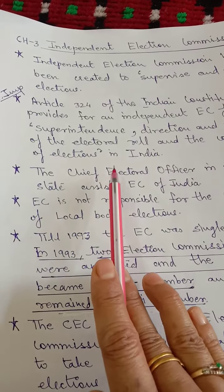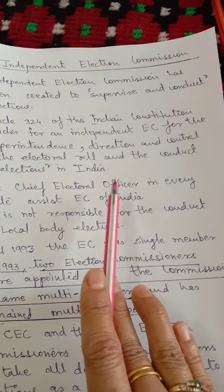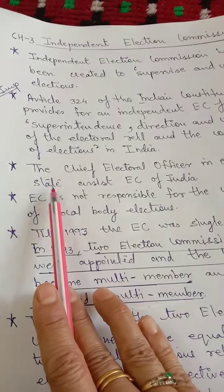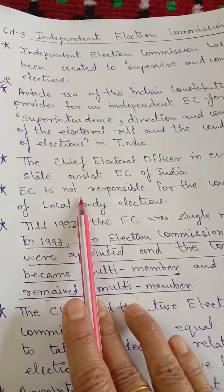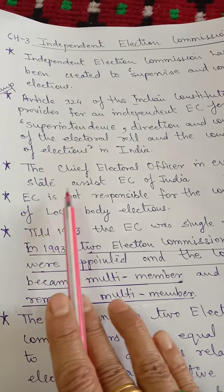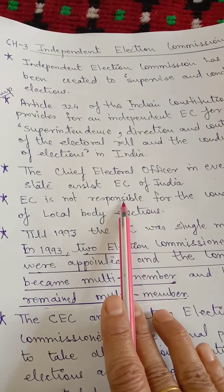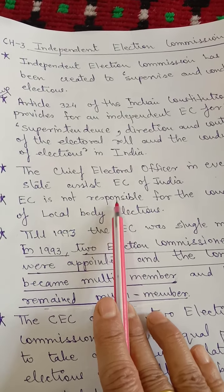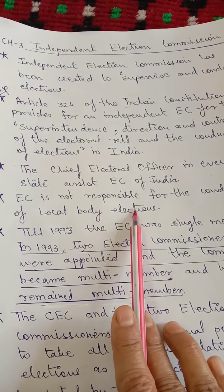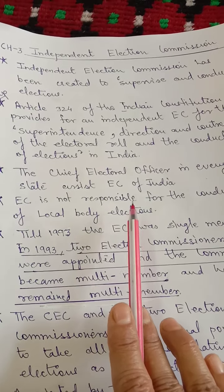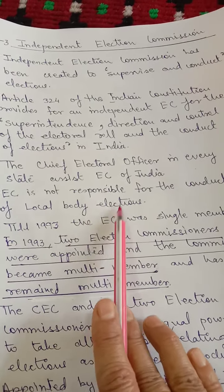To assist the Election Commission of India, there is a Chief Electoral Officer in every state. Remember, the Election Commission is not responsible for the conduct of local body elections. The state election commissioners work independently of the Election Commission of India, and each has its own sphere of operation.